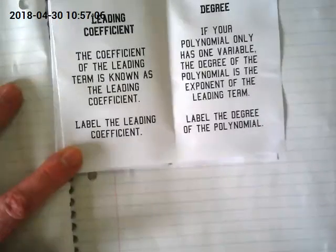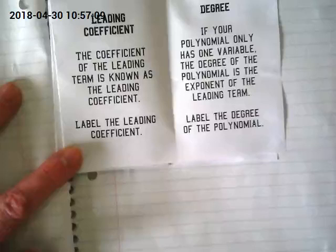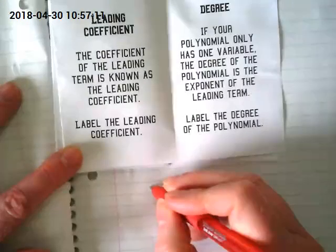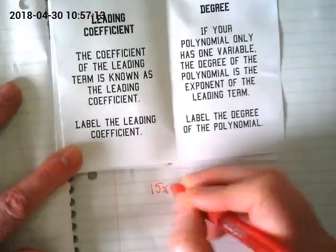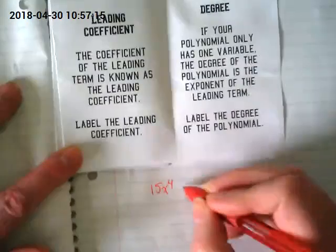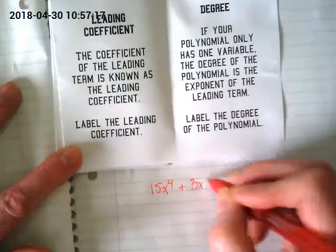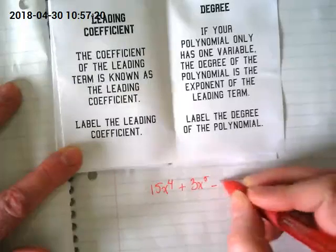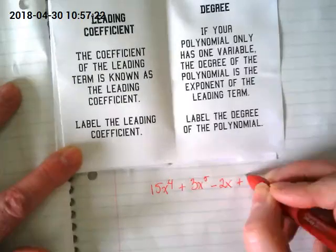I would like you to write down this polynomial. 15x to the 4th plus 3x to the 5th minus 2x plus 1.